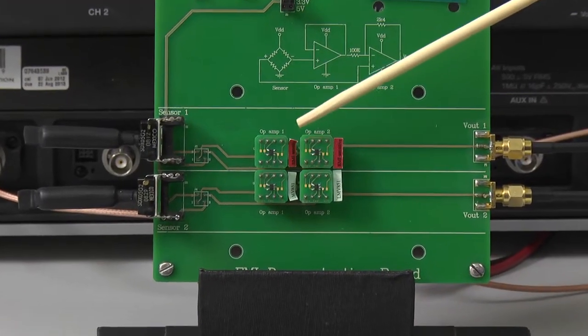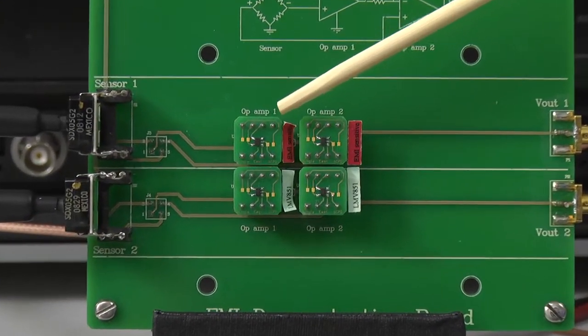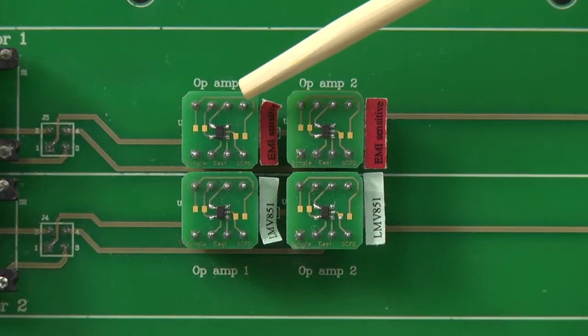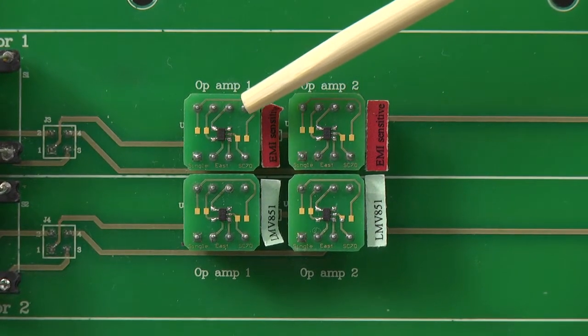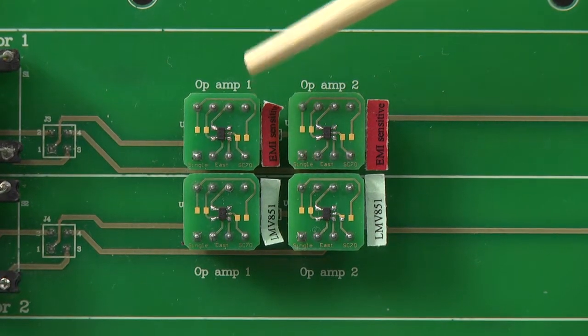One of the channels, the top channel, has the LMV 851 op-amp, but it's special because this one has its internal EMI filter disabled.